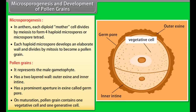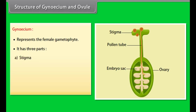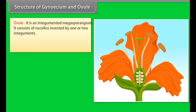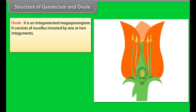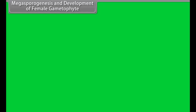On maturation, a pollen grain contains one vegetative cell and one generative cell. The gynoecium represents the female reproductive part and has three parts: stigma, style, and ovary. The ovary contains an ovarian cavity that bears the placenta. Megasporangia, or ovules, arise from the placenta. An ovule is an integumented megasporangium consisting of a nucellus invested by one or two integuments.